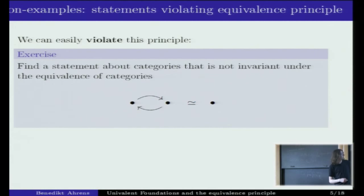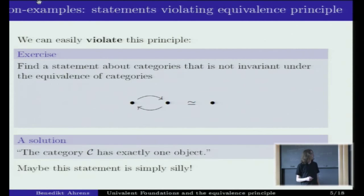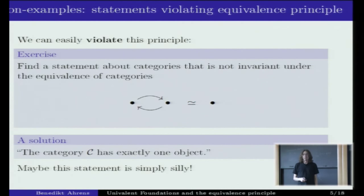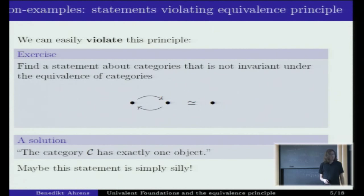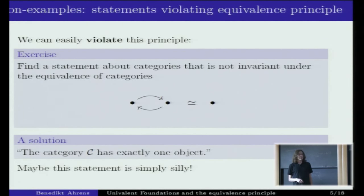We can violate this principle. For instance, we can find a statement about categories that is not invariant under equivalence of categories. One such statement would be: a category C has exactly one object. This is of course true for one category but not for an equivalent one. A reasonable viewpoint is that it's a silly statement that should not be considered.